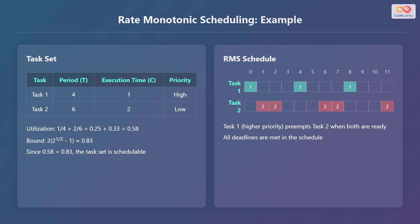In the schedule, Task 1, having the higher priority, preempts Task 2 when both are ready. As a result, all deadlines are met.